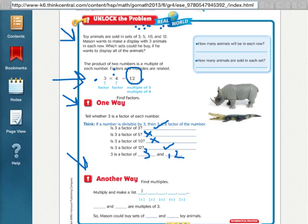Or, you could just list the multiples of 3 and see if you say those numbers: 3, 5, 10, and 12. So, you would make a list. It would be 3, 6, 9, 12, 15, and so on and so on.